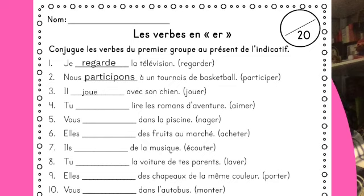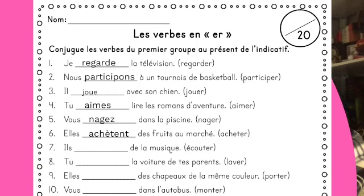Tu aimes (A-I-M-E-S) lire les romans d'aventure. Vous nagez (E-Z) dans la piscine. Elles achètent des fruits au marché — il faut un accent grave, A-C-H-È-T-E-N-T, des fruits au marché.